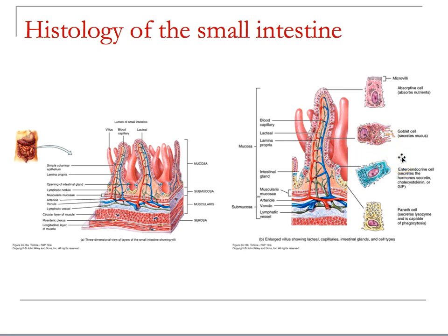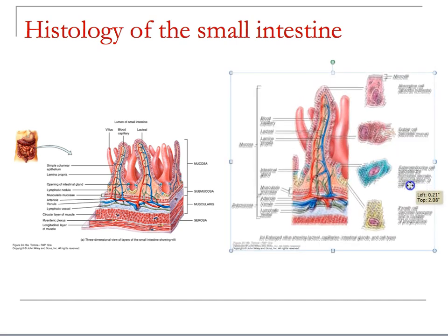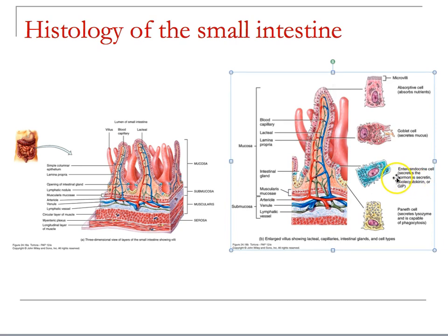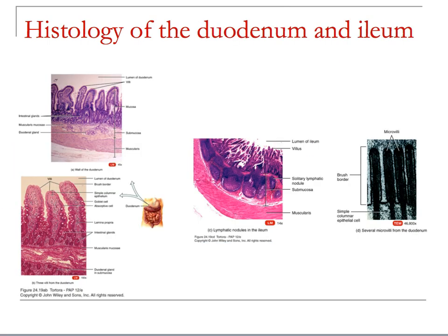Returning to those enteroendocrine cells: the major hormones are secretin, cholecystokinin (CCK), and GIP. Secretin and cholecystokinin regulate the movement of materials. GIP gets a little weird and we'll come back to that during the review. The important point is that the small intestine is also an endocrine gland — it releases hormones that regulate the function of digestion.